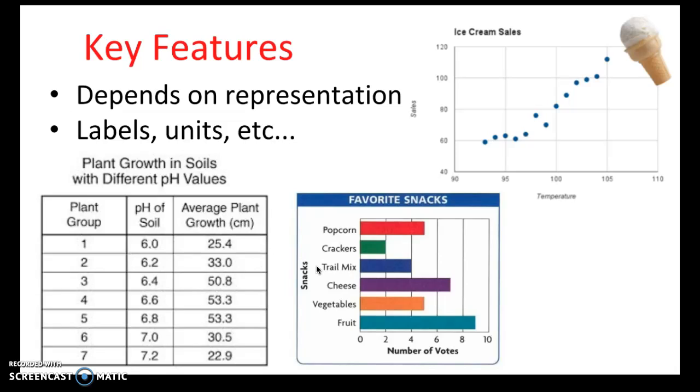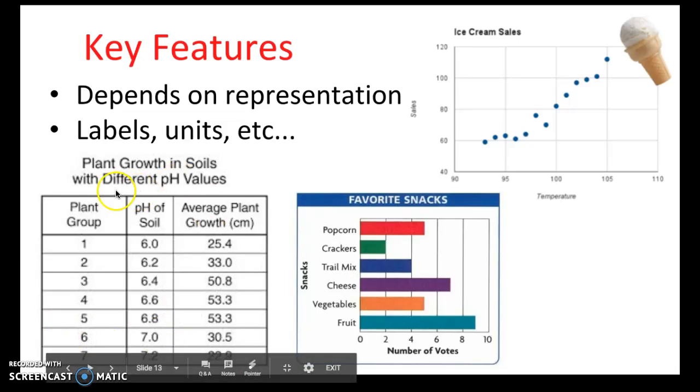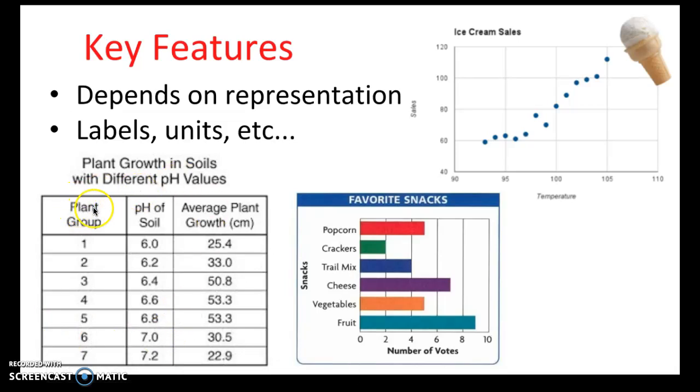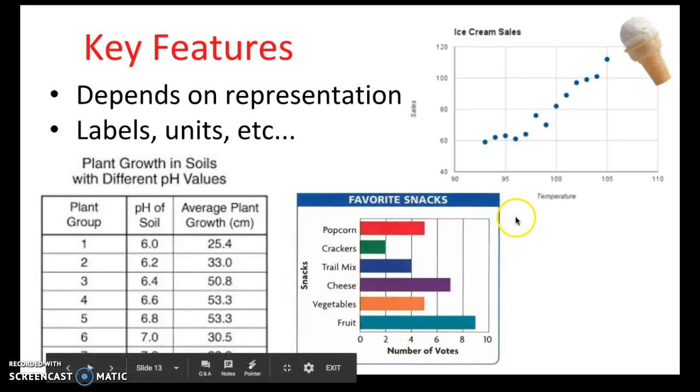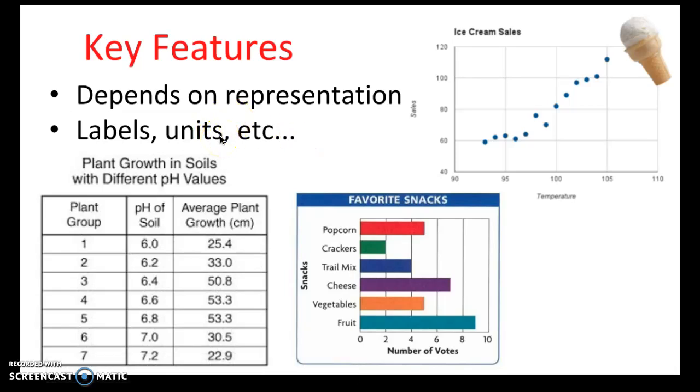Once you've grounded yourself, you're going to look for key features. And that's going to depend on the type of representation. So for example, in a data table like this, a key feature would be reading the headers on the columns or the rows. In plots and bar graphs, I would want to read the labels on the X and Y axes. Another thing that's important to look at are the units that are used. That's a very important detail.